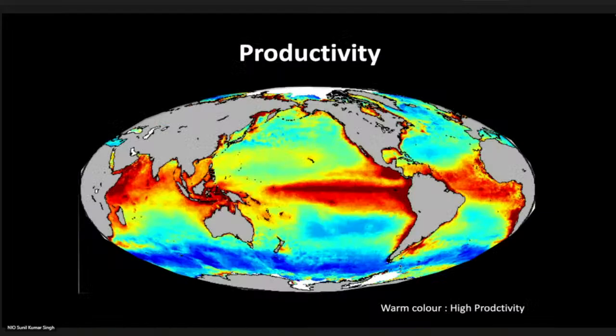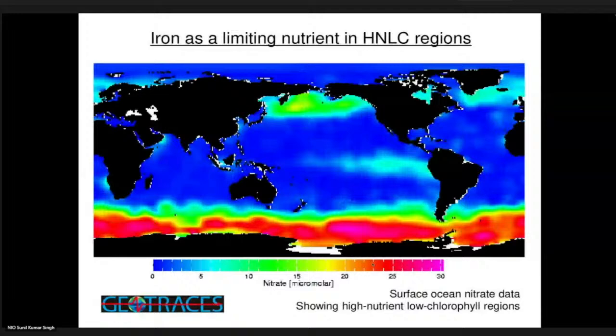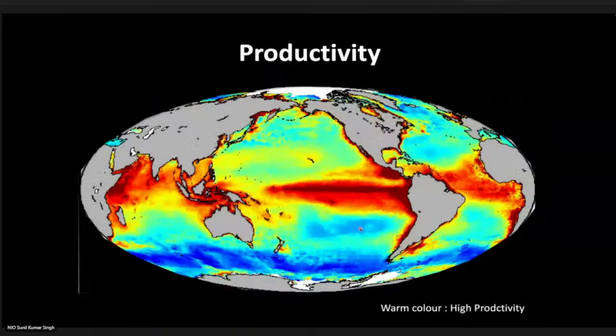If you look at the productivity of the global ocean, it is not uniform — it varies significantly. In the equatorial ocean, productivity is significantly high, but if you go to the Southern Ocean around Antarctica, productivity is very, very low. People have been asking why this happens — whether nutrients are less or what the exact reason is for this low productivity.